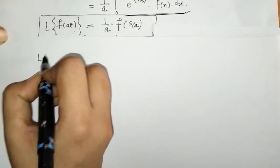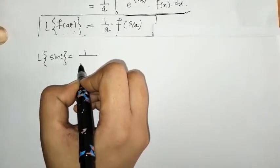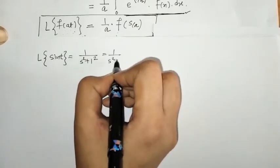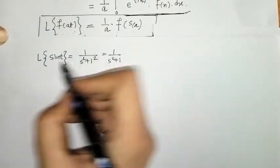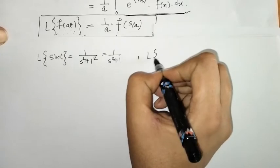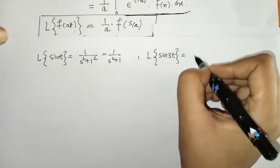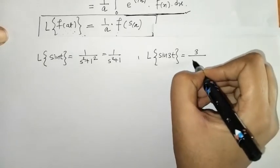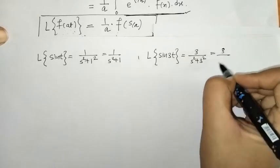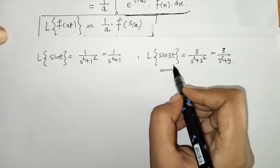Now we will understand this property with a simple example. We know that the Laplace of sin(t) is 1/(s² + 1). In general, the Laplace of sin(3t) by standard result is 3/(s² + 9).